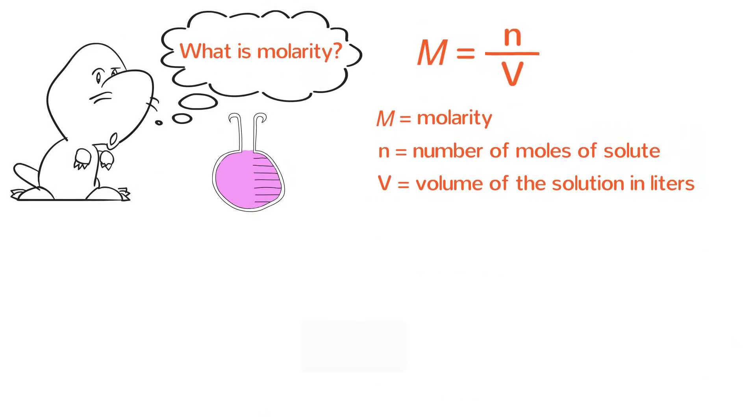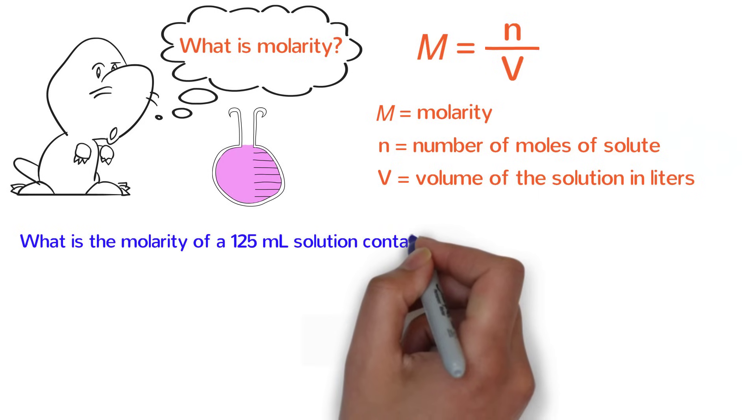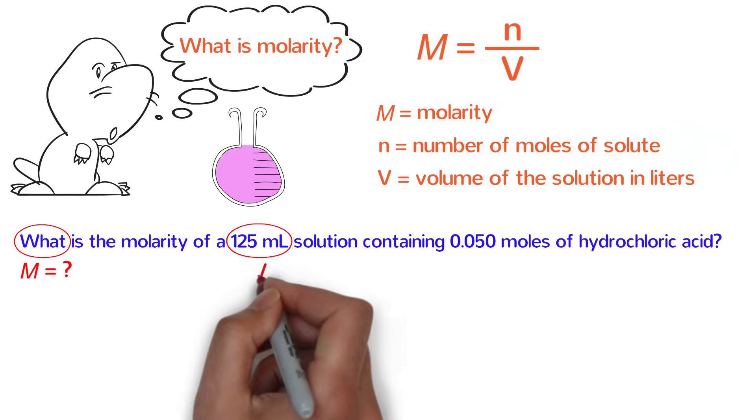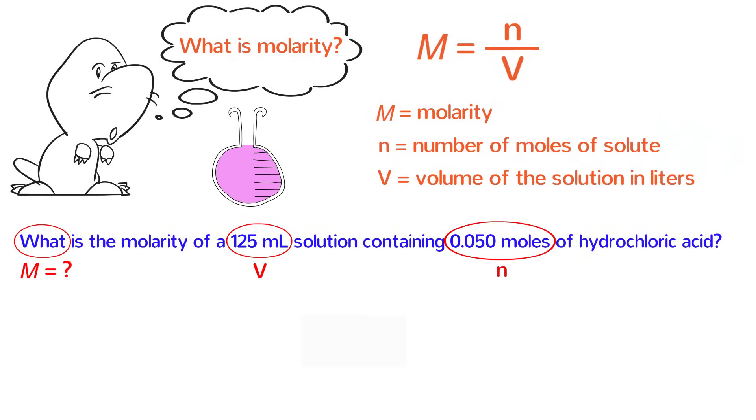Let's go ahead and try a sample problem. What is the molarity of a 125 milliliter solution containing 0.05 moles of hydrochloric acid? Before we start plugging numbers in our calculator, it's good to identify what we are solving for and the other variables in the question. The question starts out, what is the molarity, which means we are solving for molarity. 125 milliliters is the volume and 0.05 is the number of moles. Next, write down the appropriate equation, which is M equals N over V. Because M is what we are solving for, we do not need to rearrange the equation.